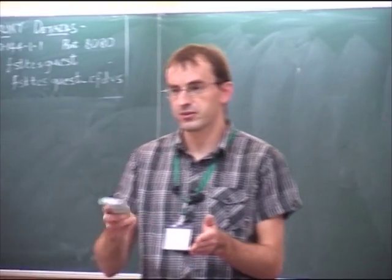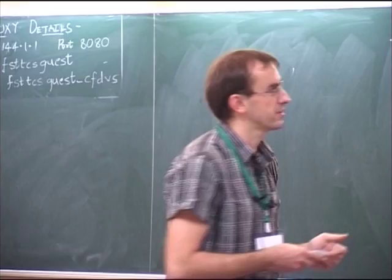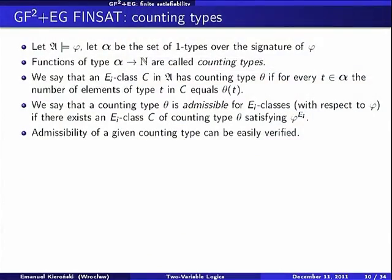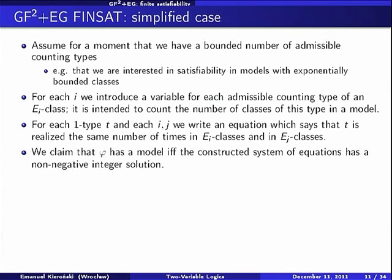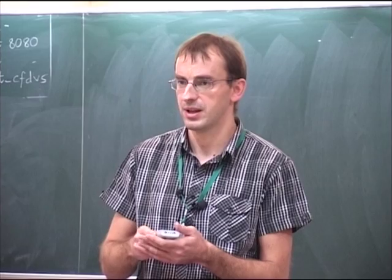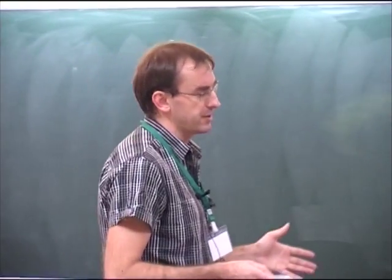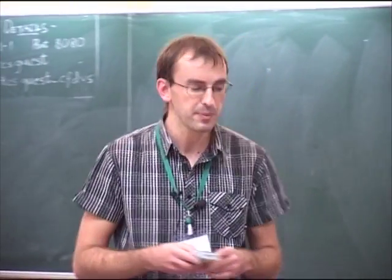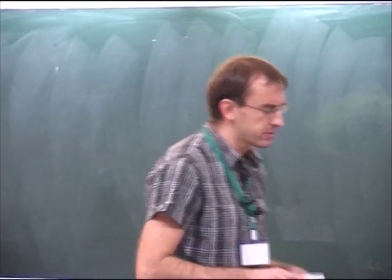Admissibility of a counting type is a simple property — we can simply guess the structure and perform model checking, so it is not hard to check. To explain my approach, I will first show a very simple idea for a simplified case: we assume there is a bounded number of admissible counting types. This may not be true in general because counting types can have unbounded values, giving potentially infinitely many admissible counting types. But let us assume only some bounded number of them exist.